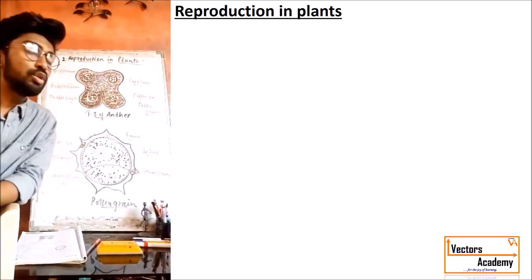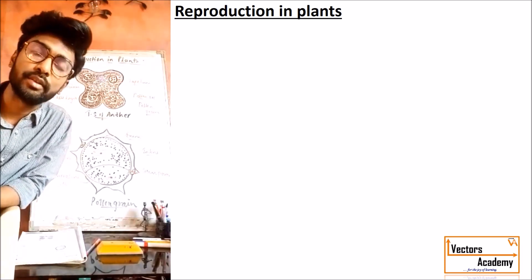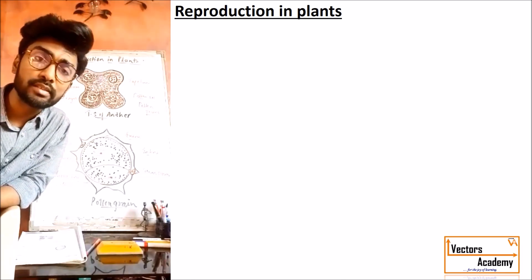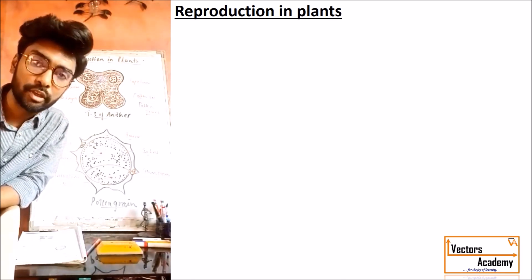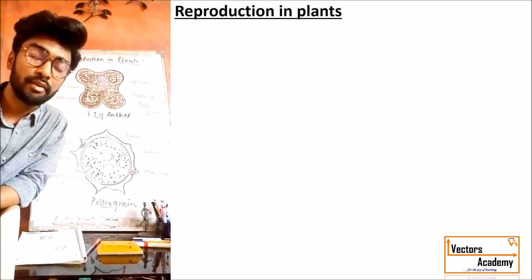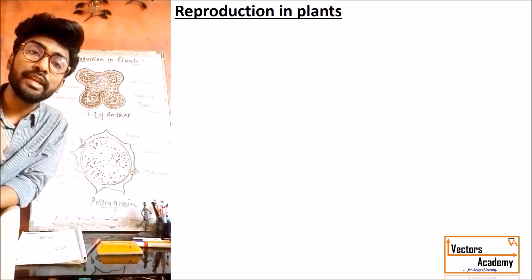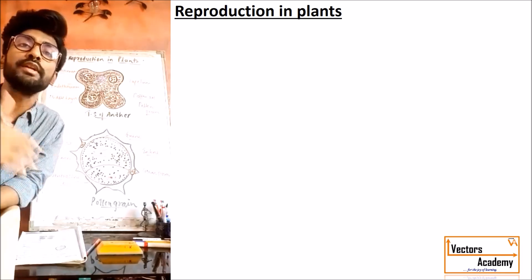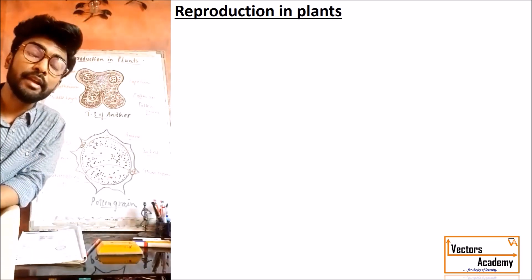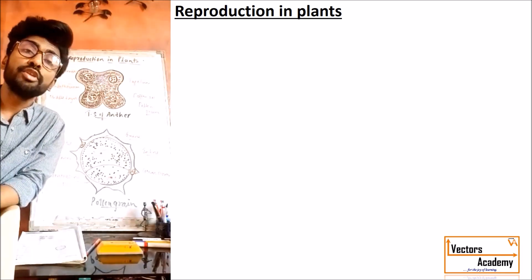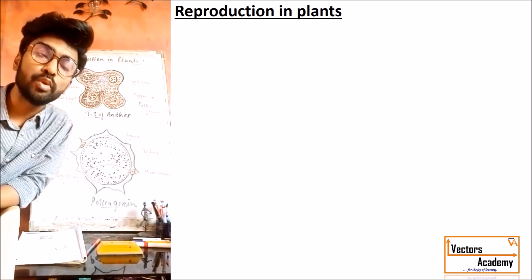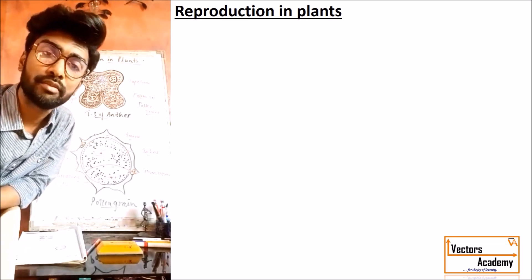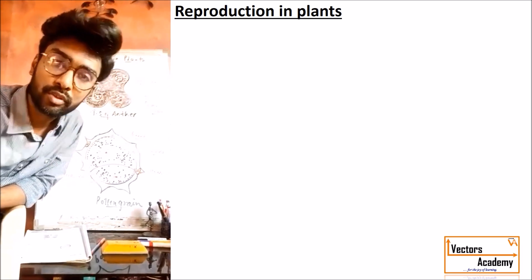Reproduction is the ability of every living organism to generally produce another living organism similar to itself. Pre-existing organisms produce new individuals. Reproduction is generally classified into two important categories: one is called asexual reproduction and second is called sexual reproduction.